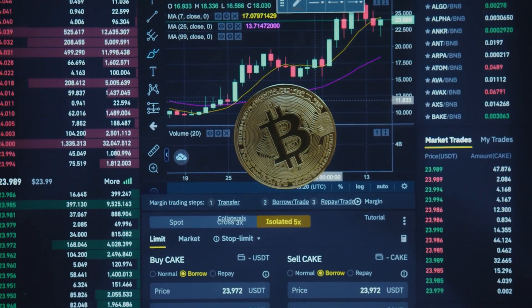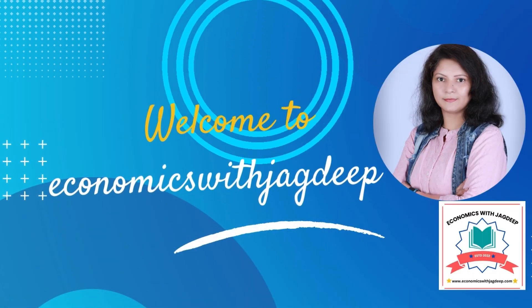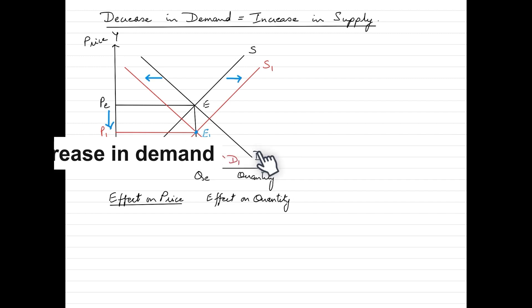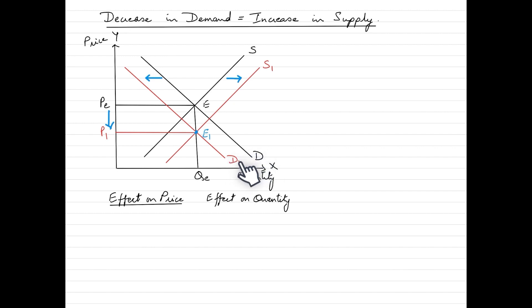The first scenario is where a decrease in demand is equal to the increase in supply. A decrease in demand and an increase in supply are two separate factors that can impact the equilibrium price and quantity in a market. Let's break down the effects of each factor and then look at how they interact. When we talk about a decrease in demand, we can see the demand curve shifting to the left from D to D1.